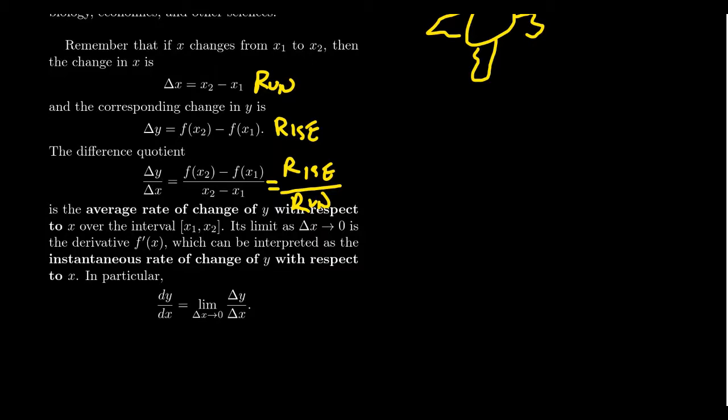And that's because the average rate of change, that's what this formula is, the delta Y over delta X, the average rate of change. How is Y on average changing as X changes on the interval X1 to X2? This measures the slope of a secant line.